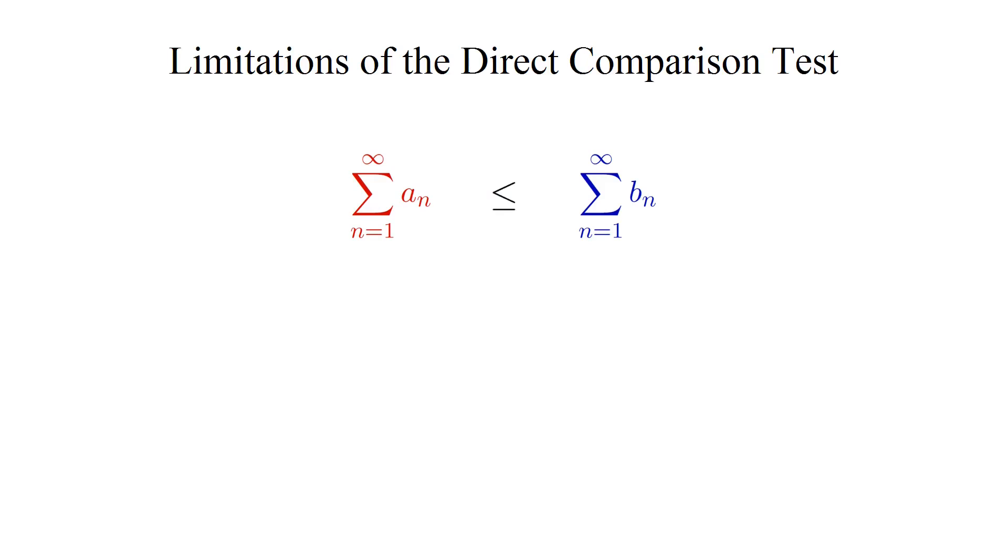But worse still, we need to make sure the correct series is the bigger one. If we compare a series to a bigger series that is divergent, we learn nothing because we would have essentially shown that our series is less than or equal to infinity. But everything is less than or equal to infinity, so we get no useful information.